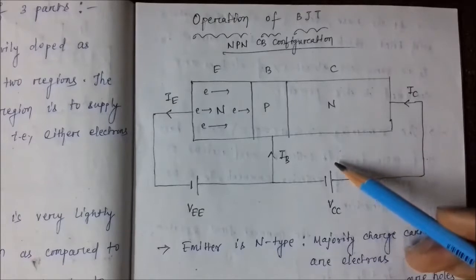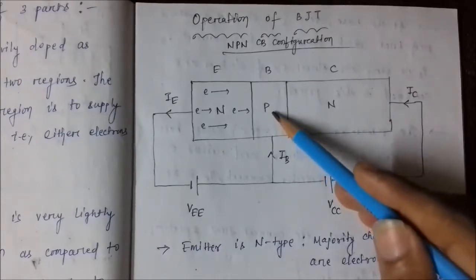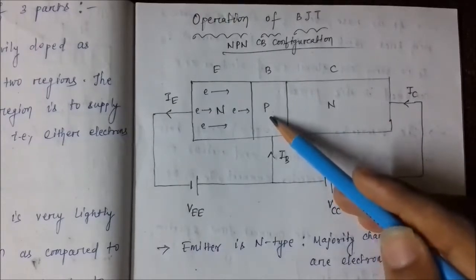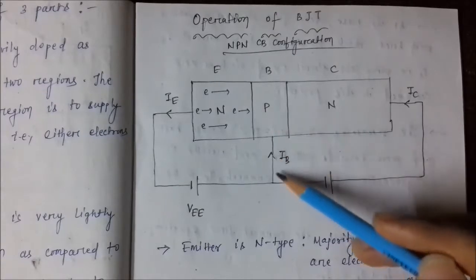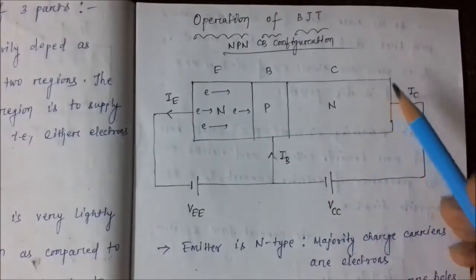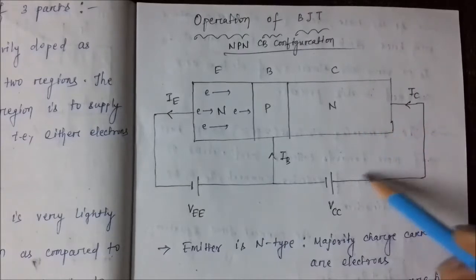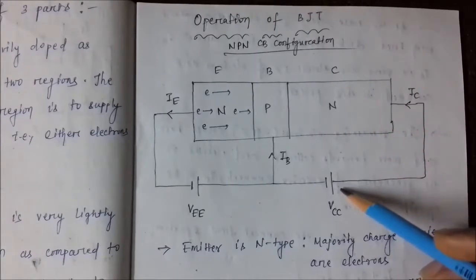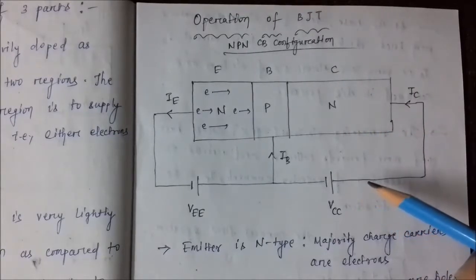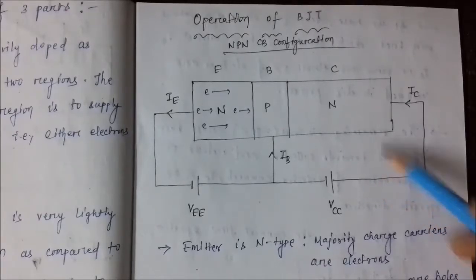Similarly, the output junction is reverse biased — the positive base end is connected to the negative terminal of the supply and the negative collector is connected to the positive supply. Now we are going to see how the current flow takes place.